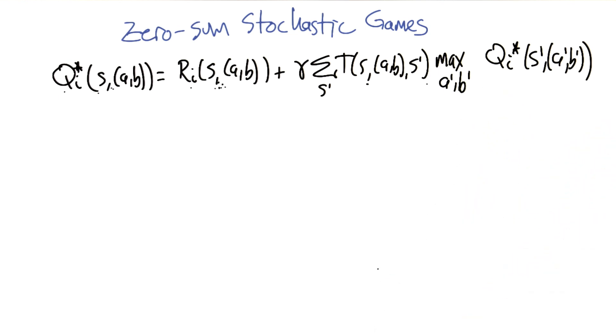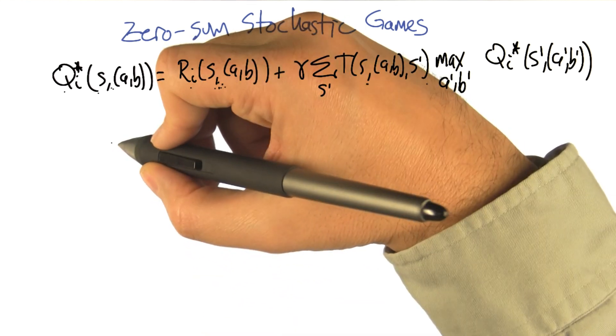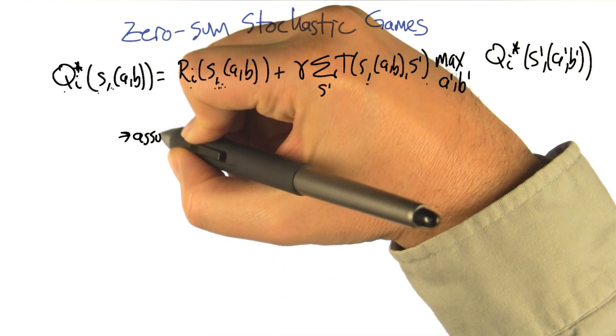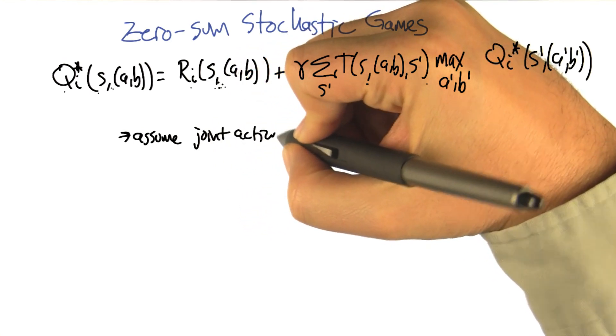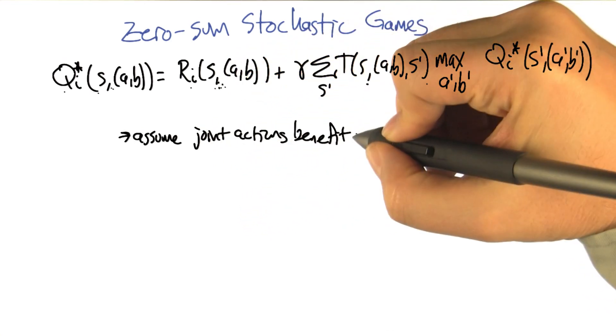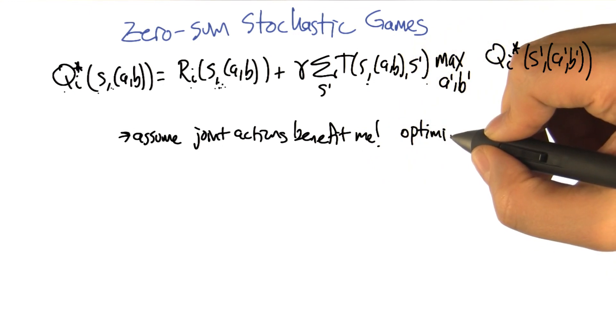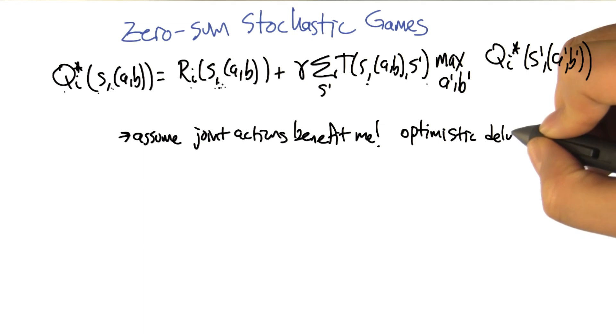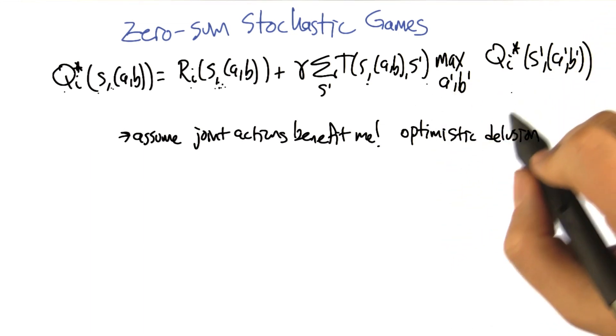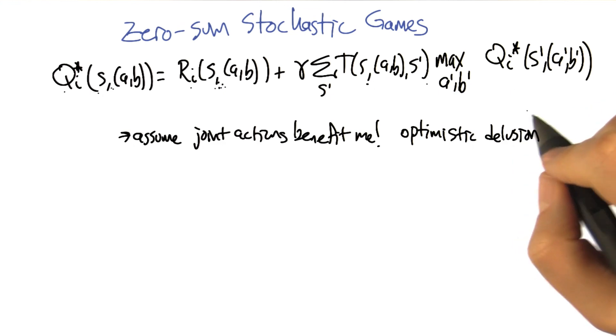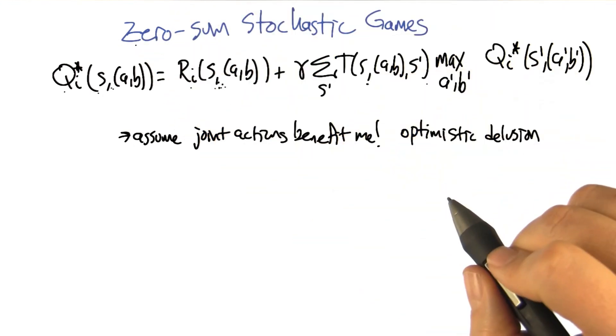So let's start off with what does it mean. It means that you kind of always assume that the joint actions that are going to be taken will benefit you the most. So everyone is trying to make you happy. So this makes you optimistic? Yeah, it's sort of optimistic to the point of delusion. Right? It just basically says whenever we're in a state, the whole world is going to choose their actions to benefit me. And this is not what we get in a zero sum stochastic game.